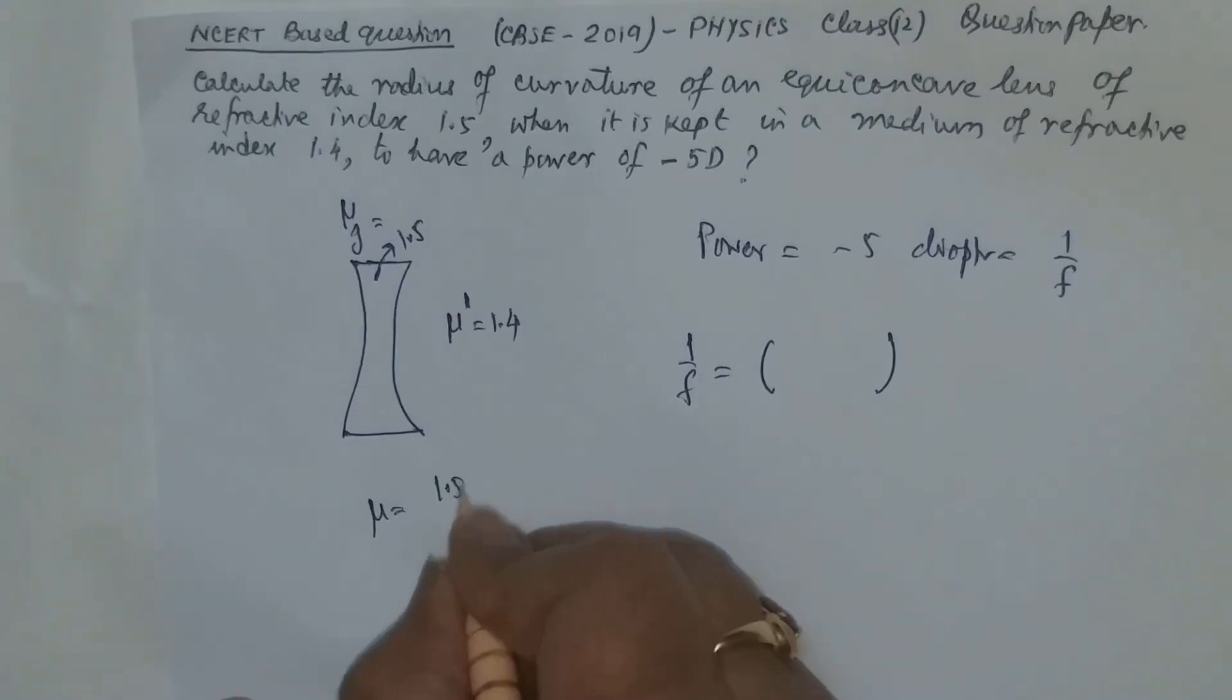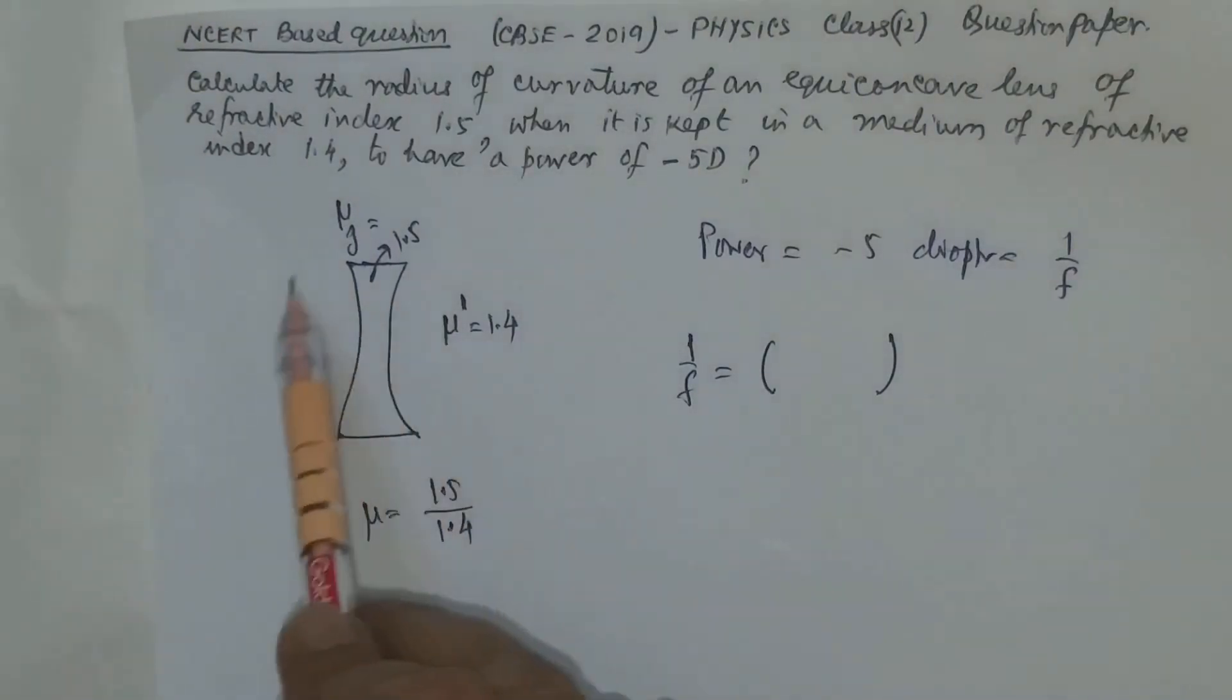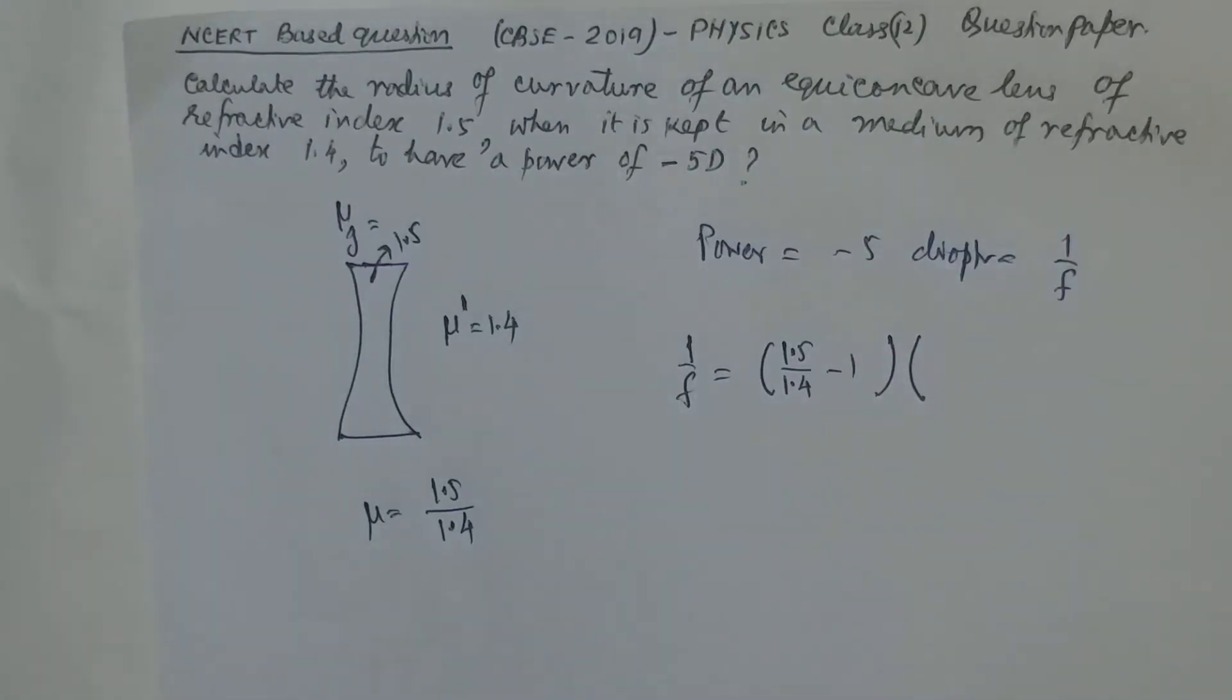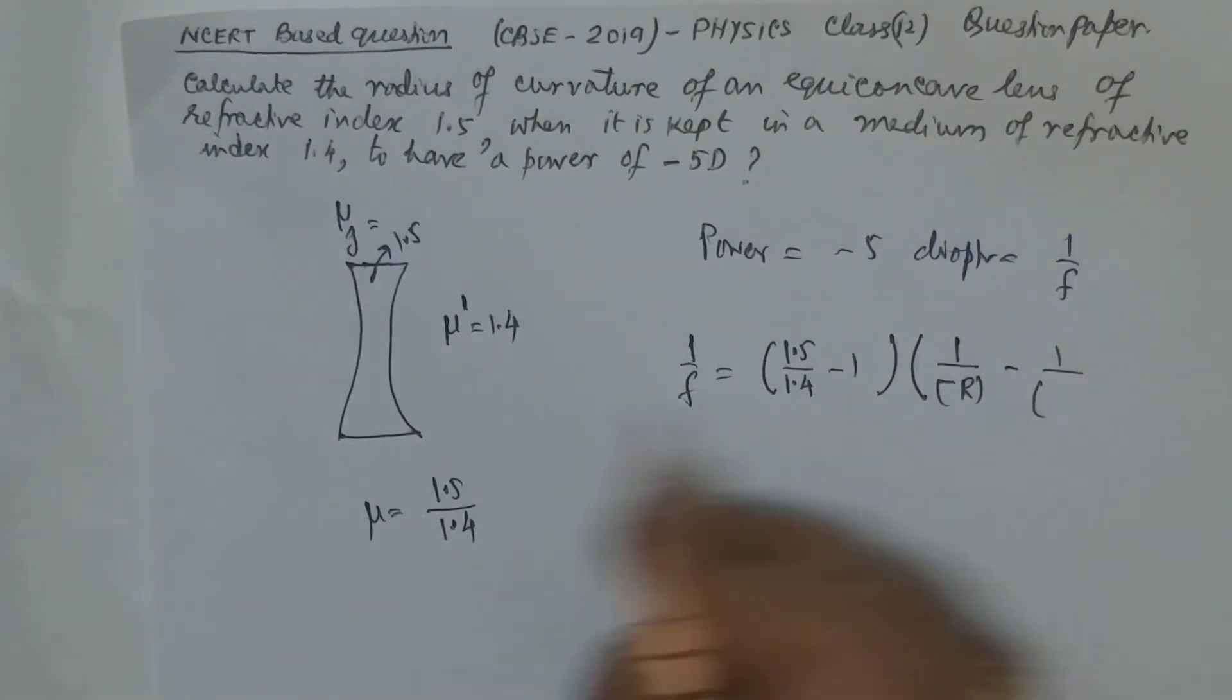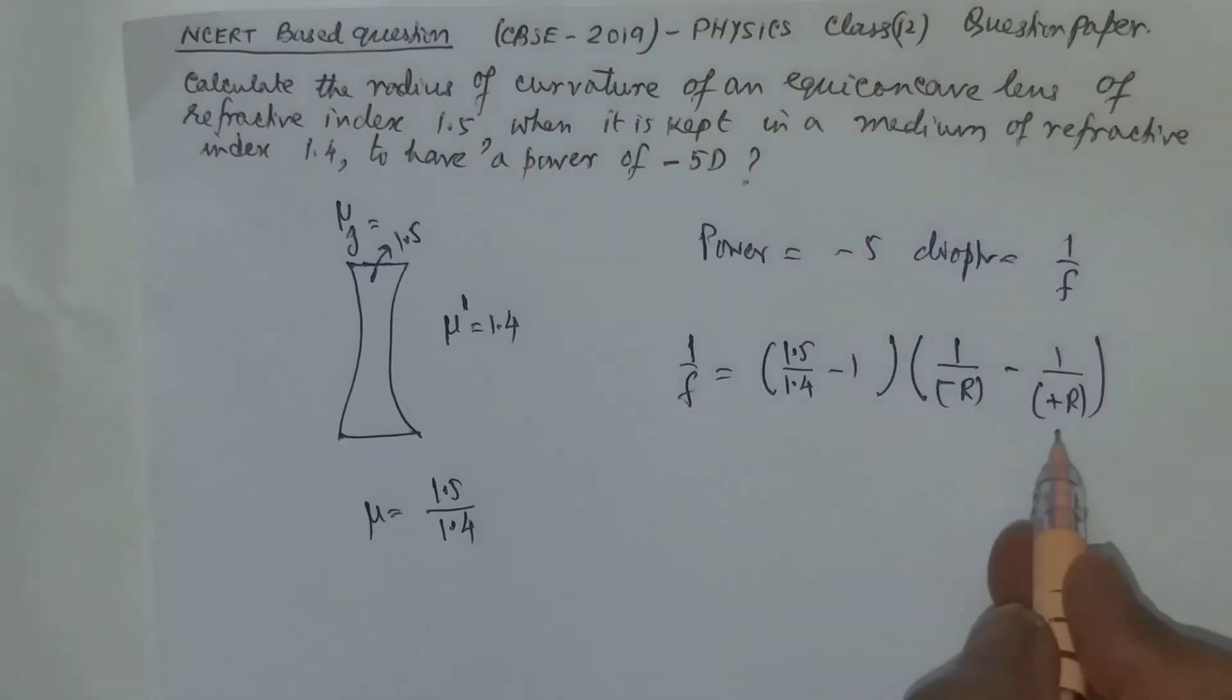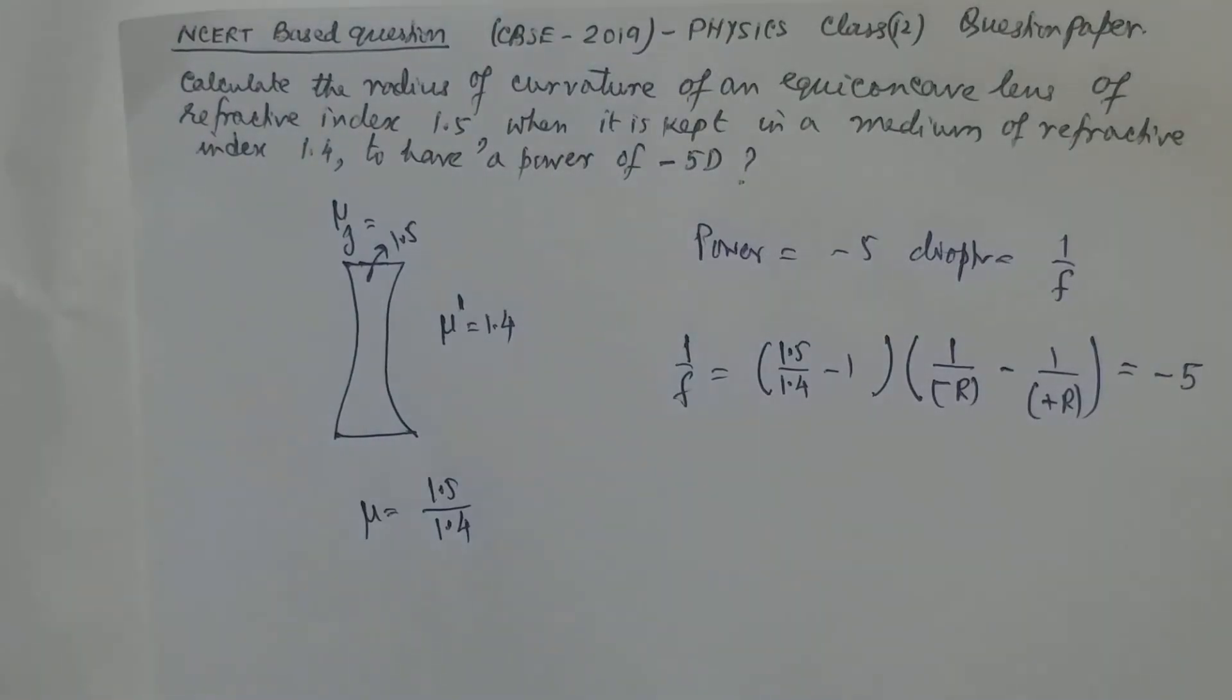Now 1 by focal length is (μ minus 1). What is μ? μ is the refractive index of the material of the lens with respect to the surrounding, provided both sides of the lenses are having the same medium. Then only we can use the lens maker's formula. So μ is 1.5 by 1.4 minus 1, times (1 by R1 minus 1 by R2). Now see, R1 is to the left side. So 1 by minus R, minus 1 by R2 is to the right side. So we are taking it to be plus R, and this 1 by F is given as minus 5.